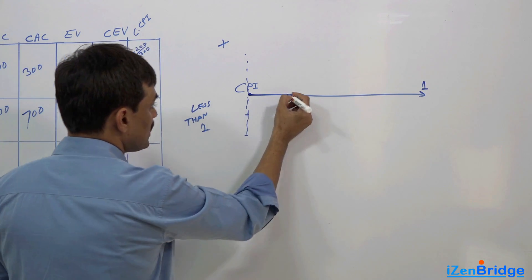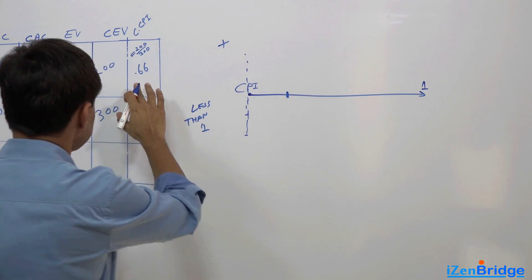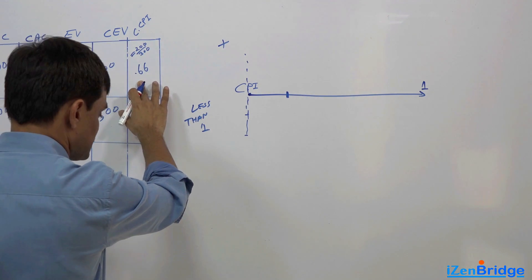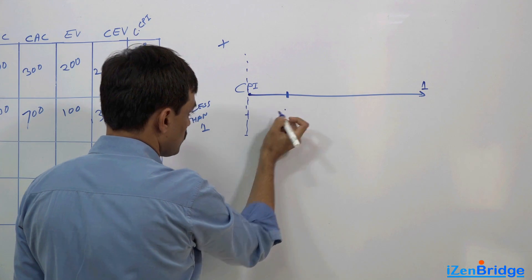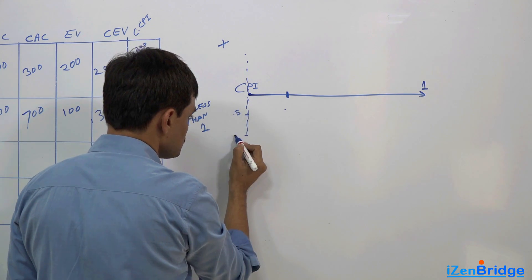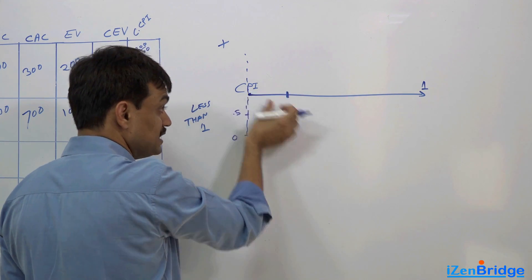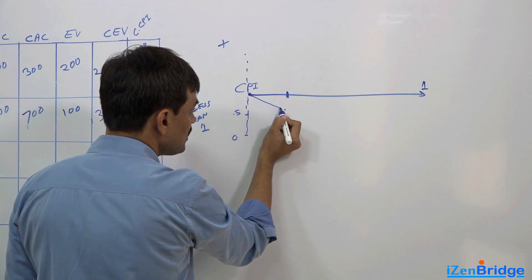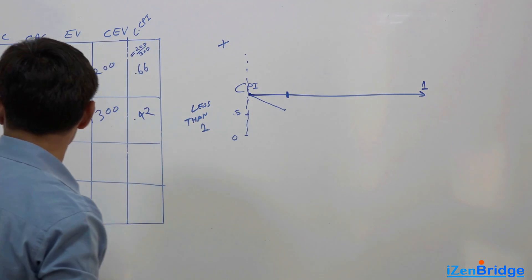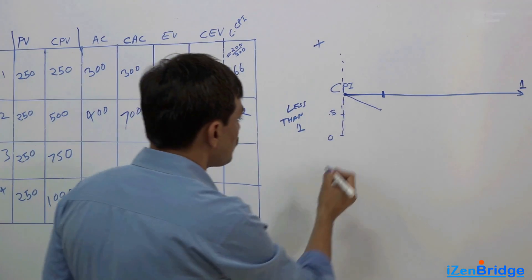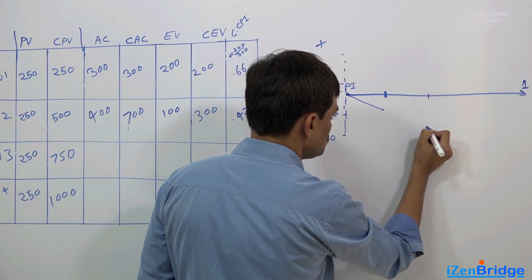So here assuming it is near 0, here it is like 0.5. So at the end of week 1, I can say I was at 0.66, so I was somewhere here. As you remain up, you are near to 1. At the end of week 2, I was somewhere here at 0.42.